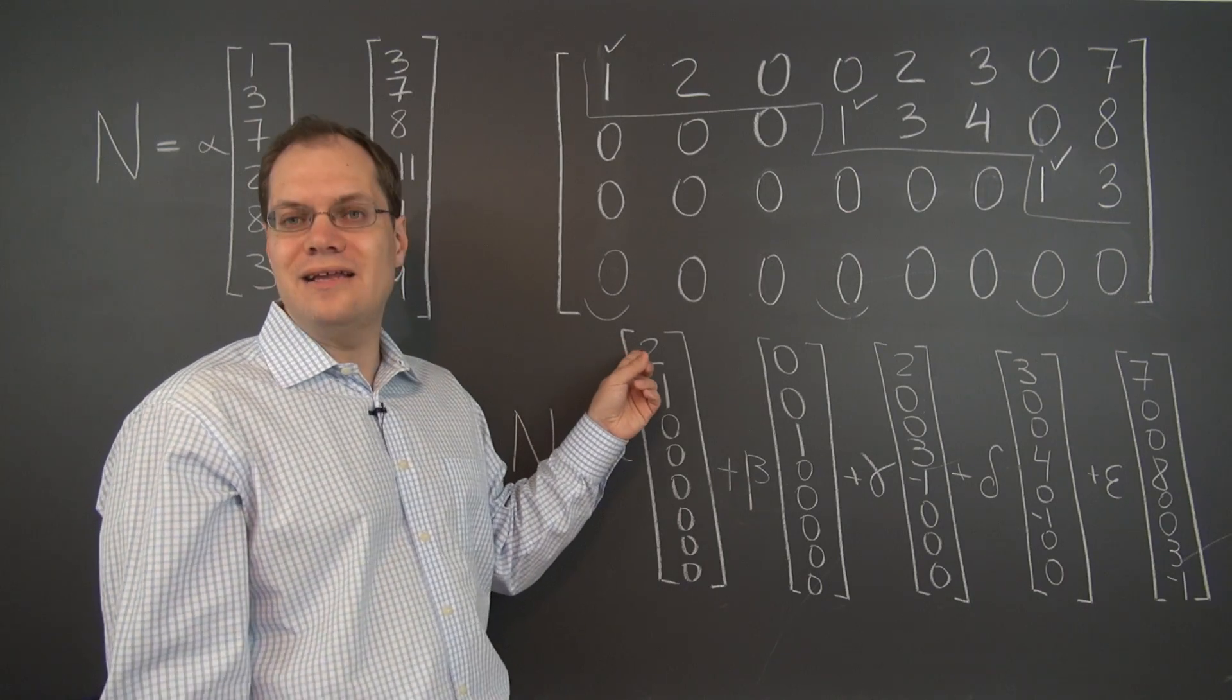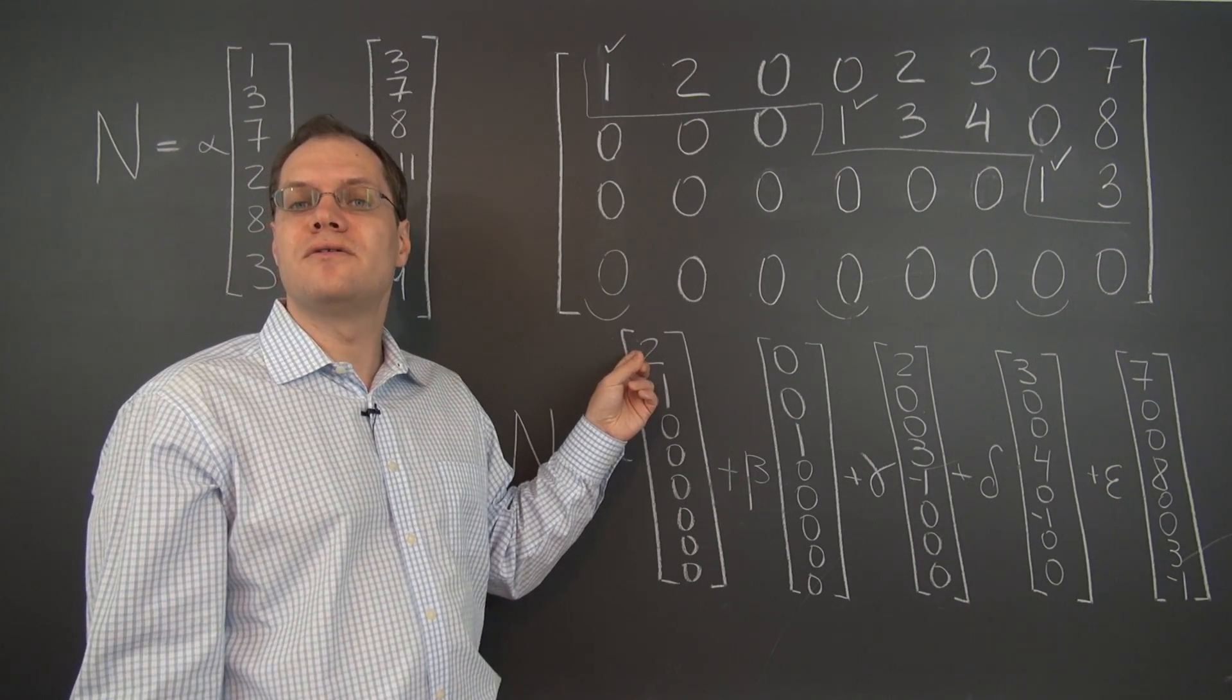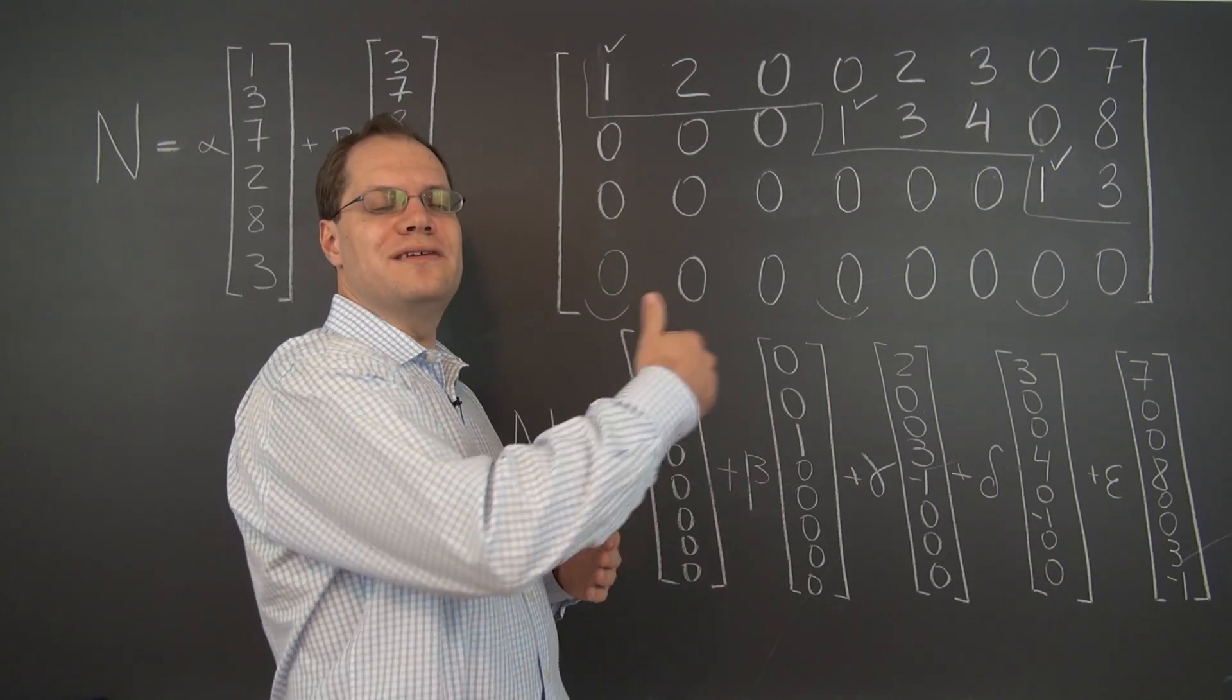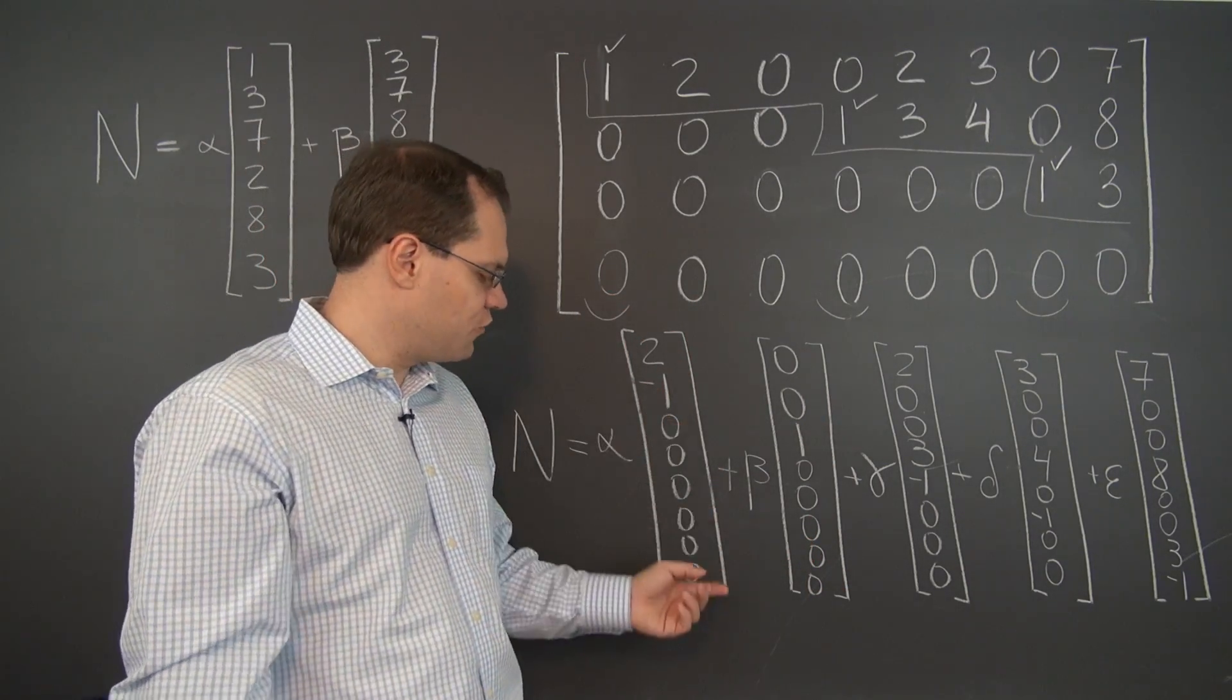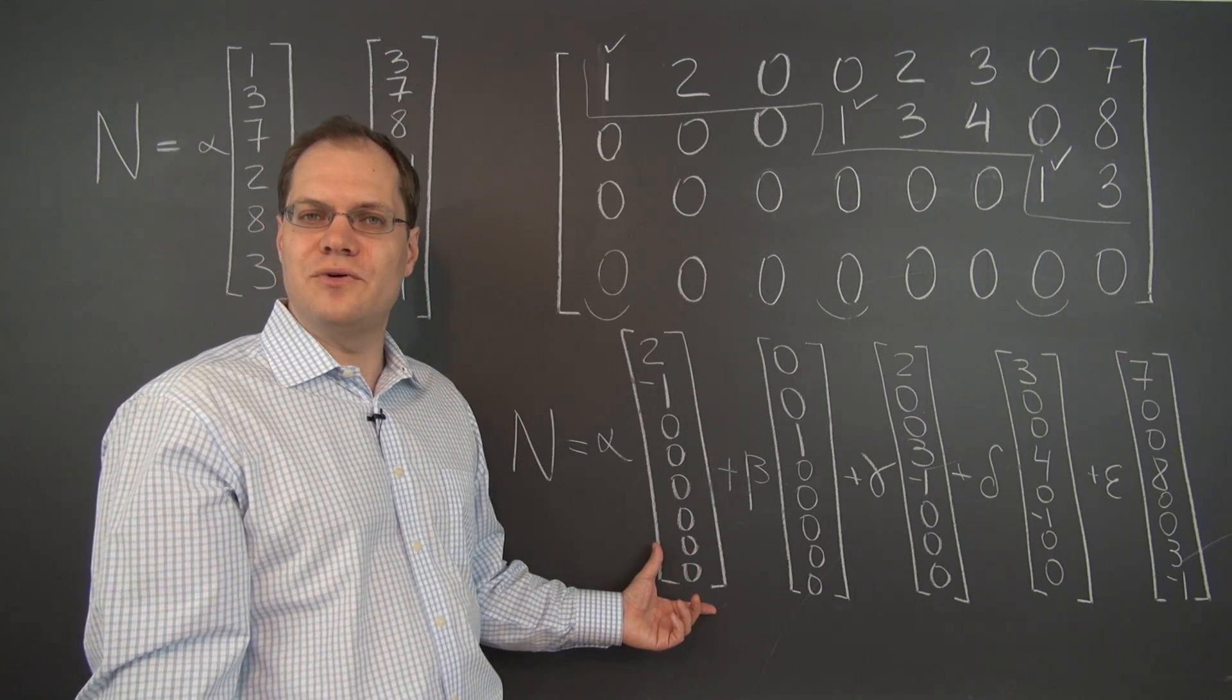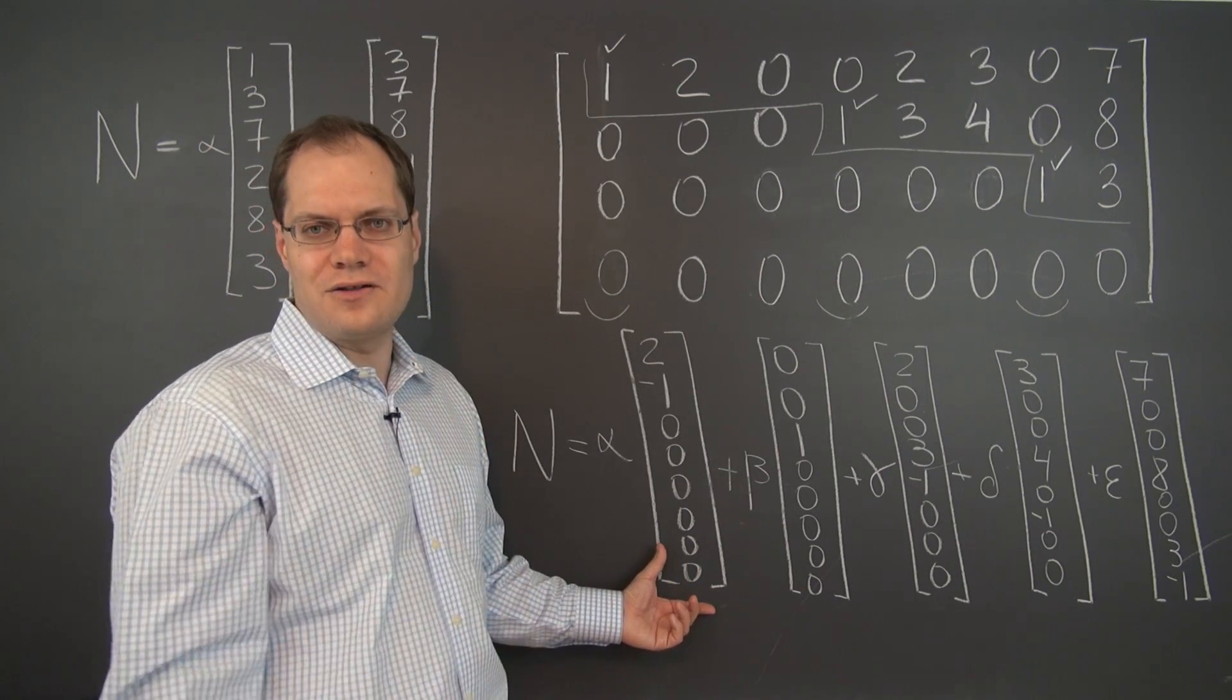If the first column was not a pivot column, then there would never be any number here. We're expressing one of the later columns in terms of the first column. So we know the first column of the row reduced echelon form: it must be one followed by all zeros.